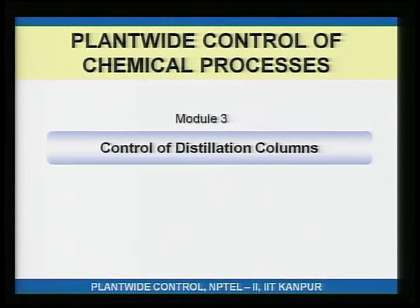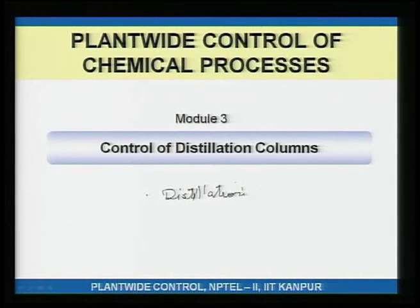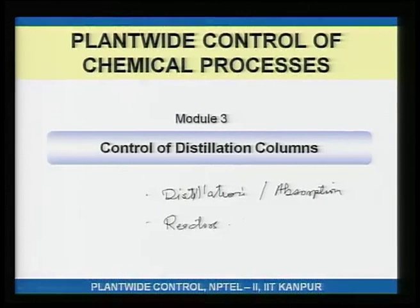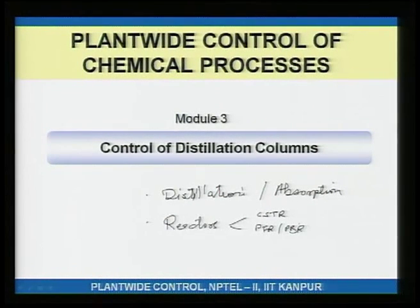The most common unit operations in industry are distillation and separation units, distillation columns, absorption towers, and reactors — which are the heart of the process where the value-added product gets produced. Basic reactor types include CSTR, plug flow reactors, packed bed reactors, and combinations thereof.